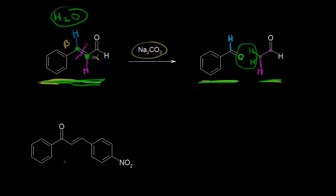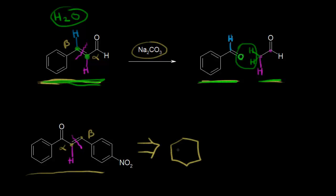For example, let's say a question on a test was: show how you could synthesize this enone. We're going to do the same kind of analysis — find our alpha carbon right here, and then our beta carbon. Attached to our alpha carbon, we know there's a hydrogen, so we're going to think about breaking this double bond. Let's draw a retrosynthesis arrow. On the left, we're going to have our benzene ring and our carbonyl, with a hydrogen attached to the alpha carbon. We're going to add two hydrogens to our alpha carbon, and that gives us the ketone that we would need.